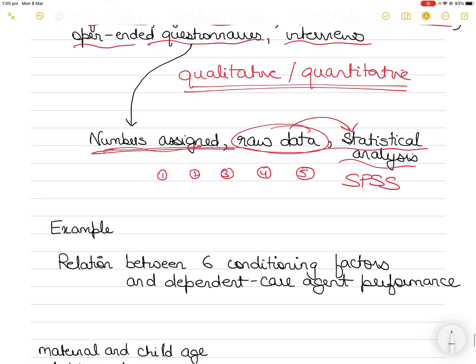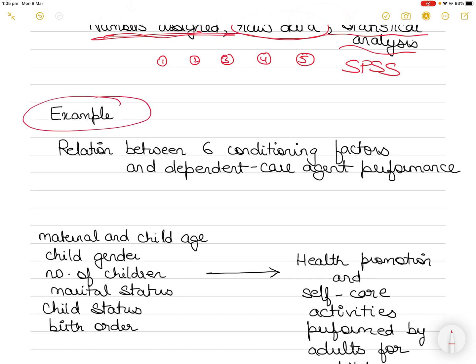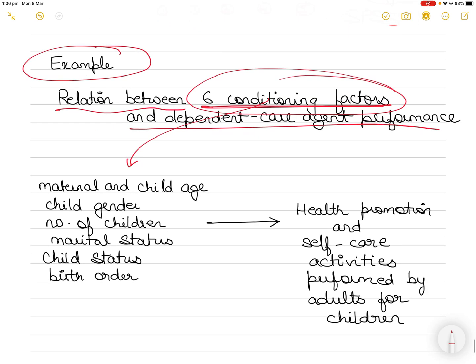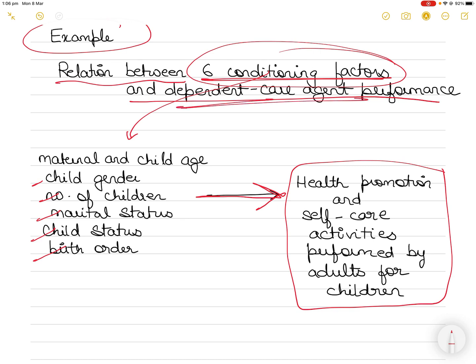Another explanatory theory example: a researcher tried to explain the relationship between six conditioning factors and dependent care agent performance. He defined them through maternal and child age, child gender, number of children, marital status, child status—whether the child was adopted, biological stepchild, or birth order—then ethnic group, socioeconomic status, maternal employment status, child health problems. But the dependent variable was only one, defined by health promotion and self-care activities performed by adults for children. So basically, you get all this data from the conditioning factors and then correlate it to the dependent variable and explain the relationship between the two.